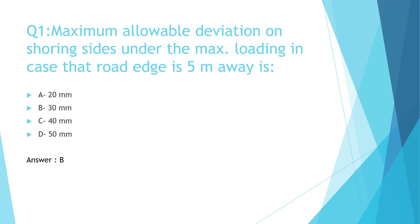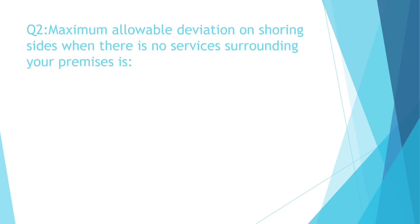Question 2: Maximum lateral deviation on shooring sites when there are no services surrounding your premises. Options: a) 20 millimeter, b) 30 millimeter, c) 40 millimeter, d) 50 millimeter. The correct answer is d) 50 millimeter.